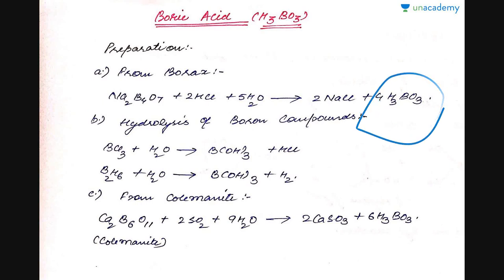Na2B4O7 on treating with HCl in presence of excess water gives NaCl plus H3BO3, where H3BO3 represents boric acid. Next is by hydrolysis of other boron compounds.